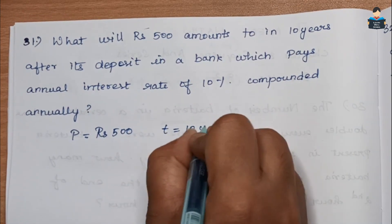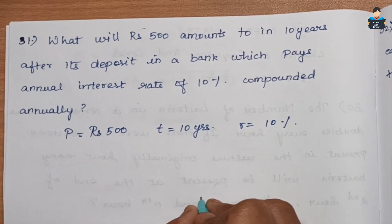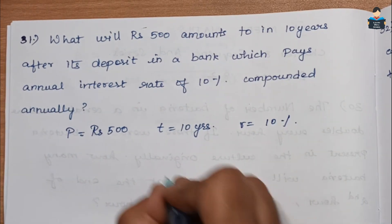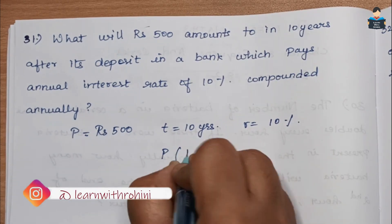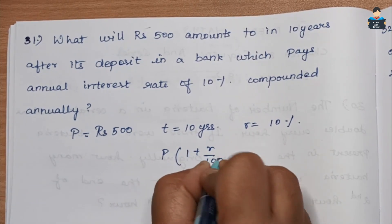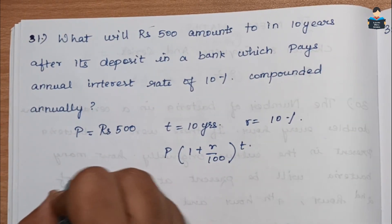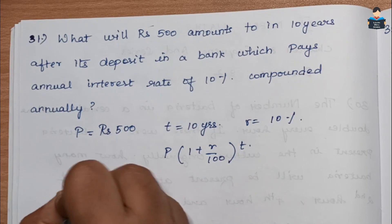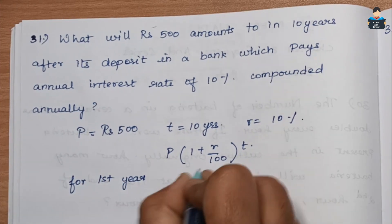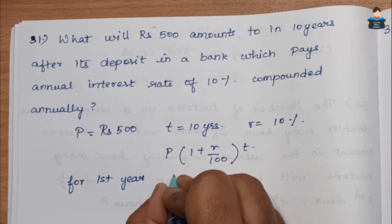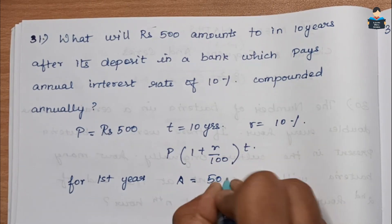Question 31: What will Rs. 500 amount to in 10 years after its deposit in a bank which pays annual interest rate of 10% compounded annually? P equals Rs. 500, t equals 10 years, and rate of interest r is 10%. The compound interest formula is: A equals P times (1 plus r by 100) to the power t. For the first year...